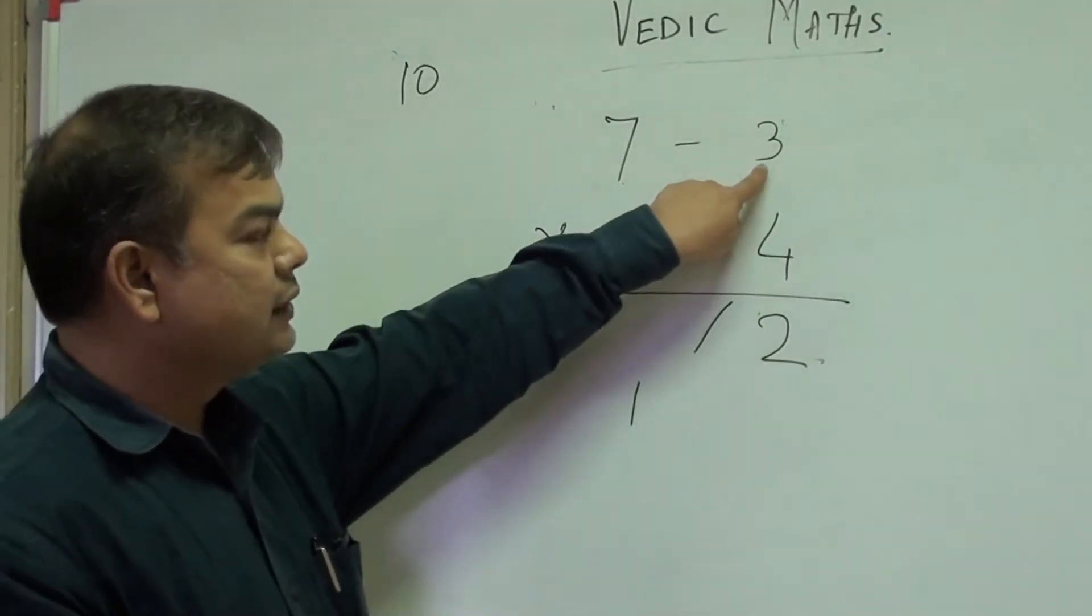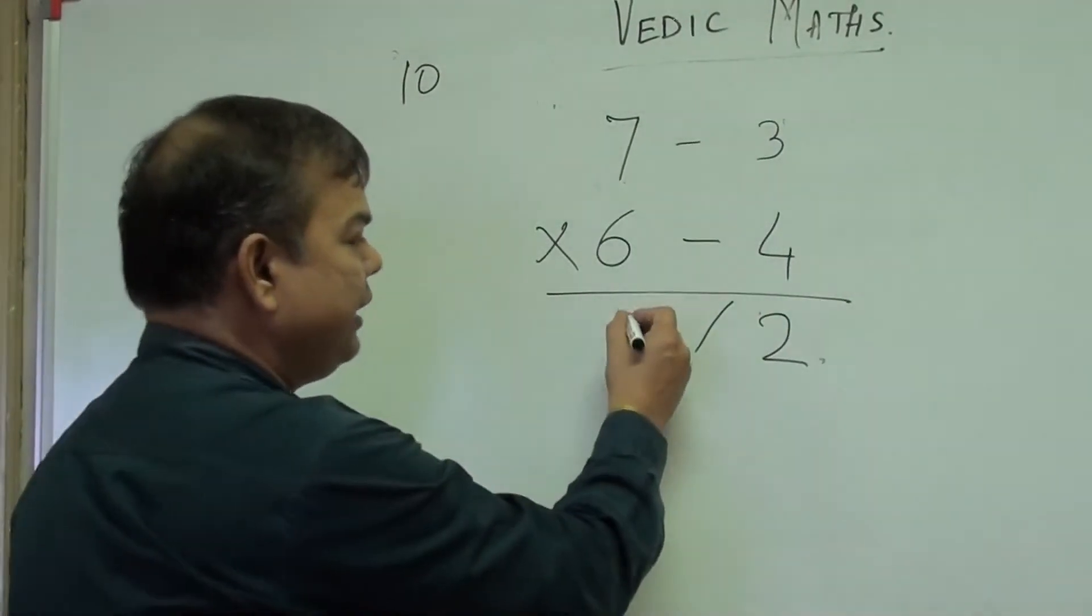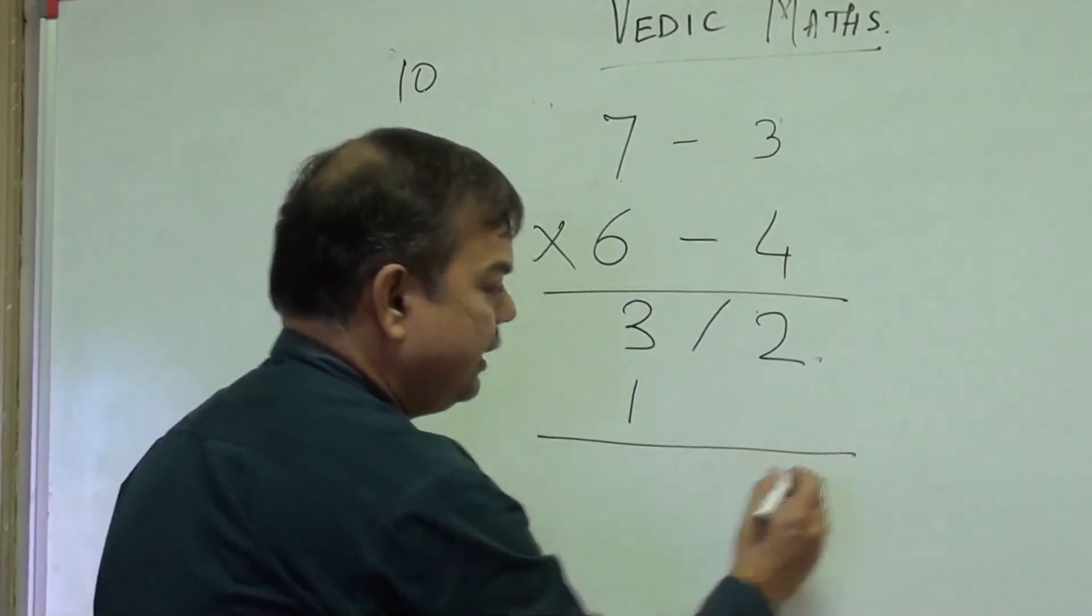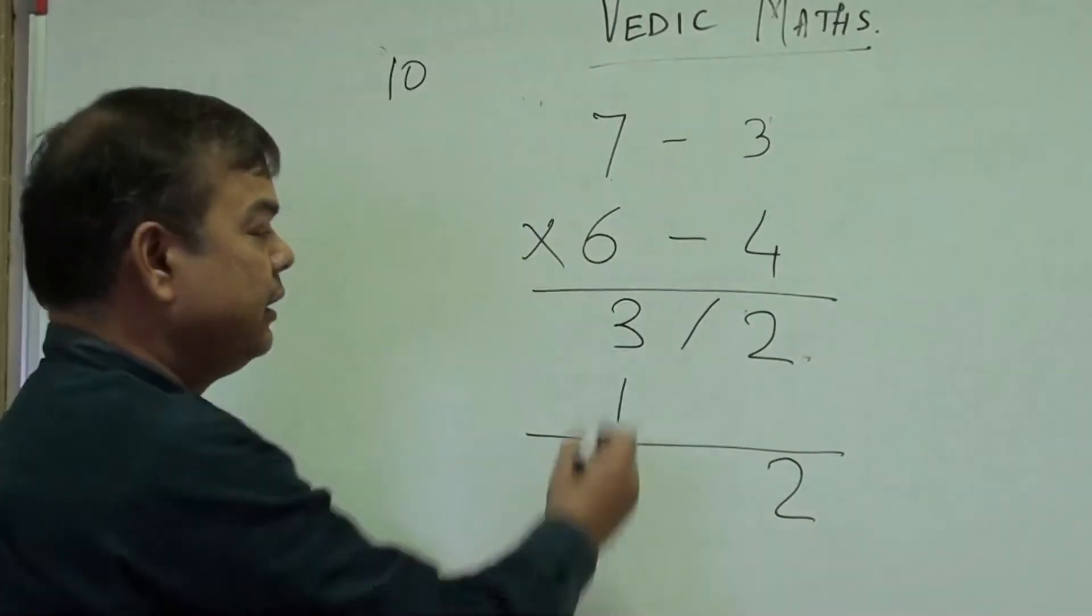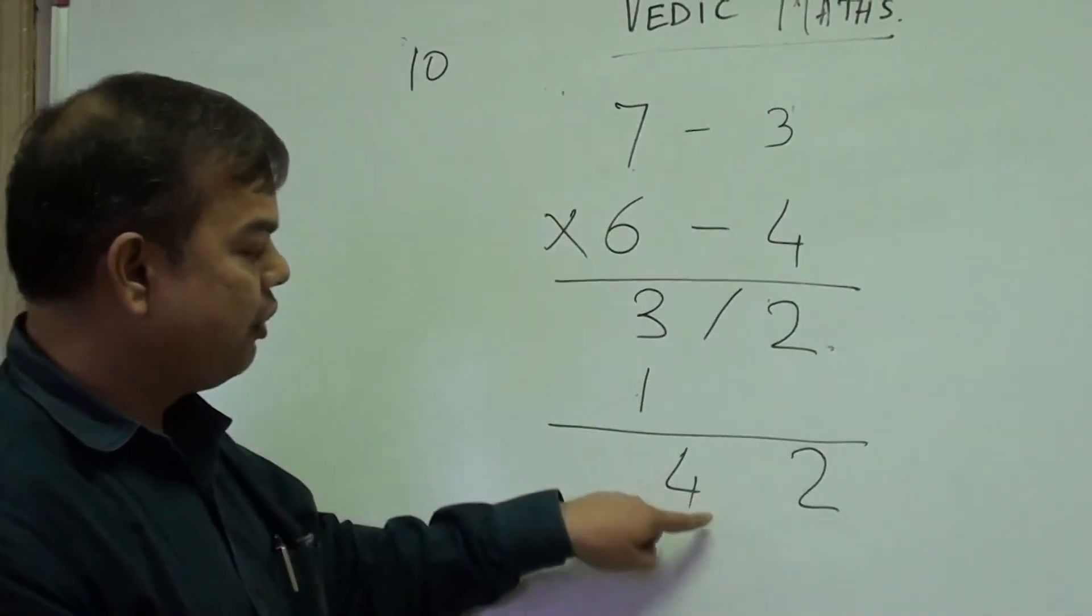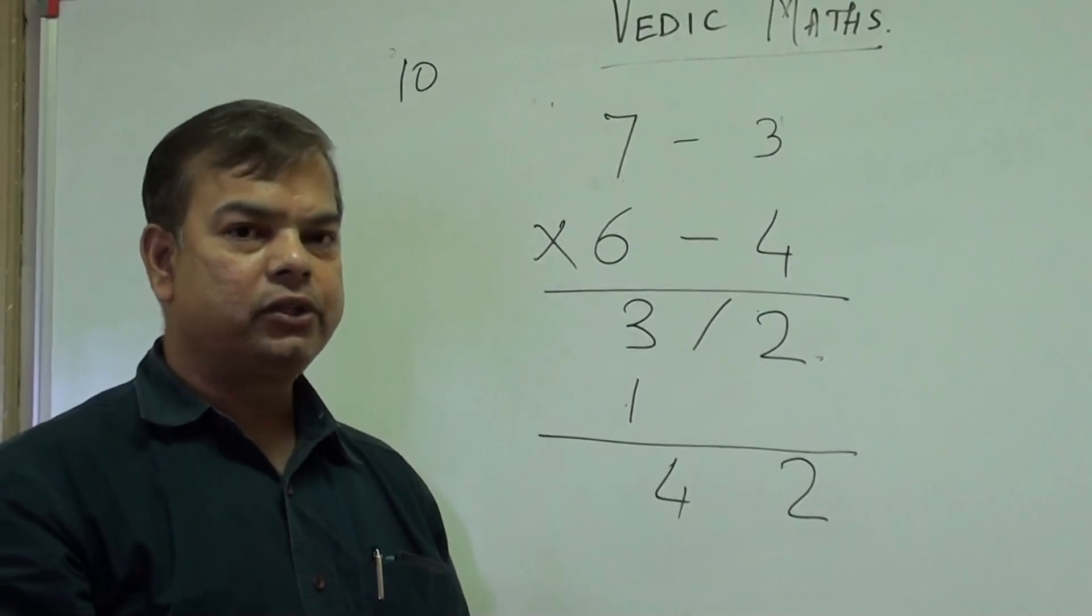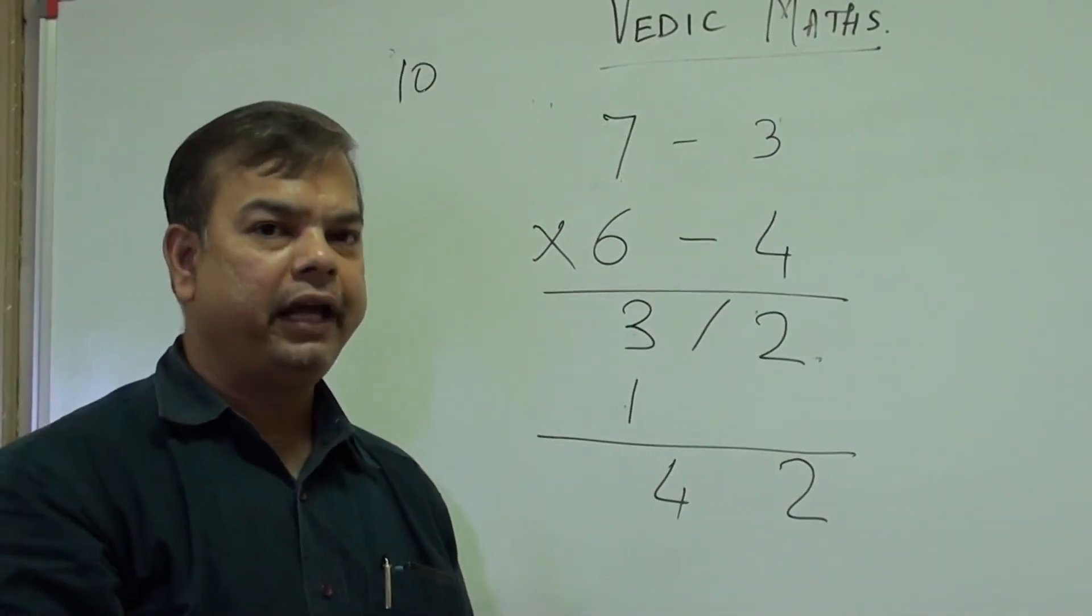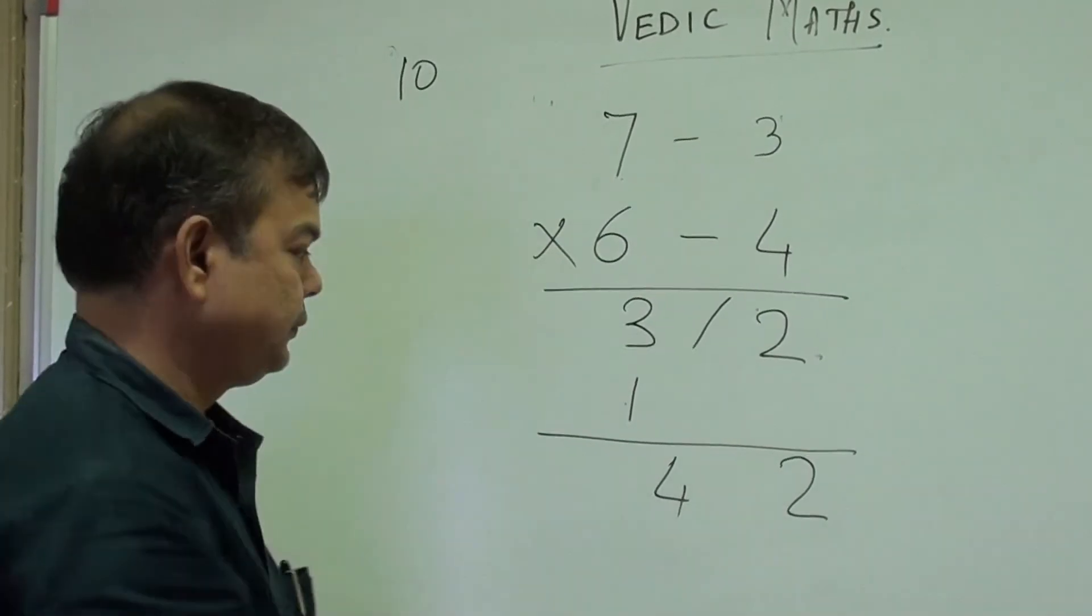So we will write 3 here, and then we will do addition. So our answer is 2 as it is, 3 plus 1 is 4. So 6 sevens are 42. I hope you have understood how to do multiplication using this Vedic method.